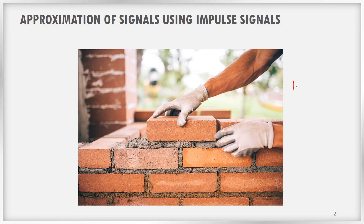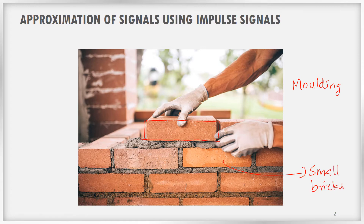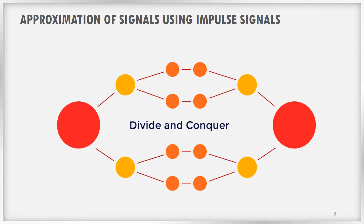Instead of molding our houses, we use small bricks to build them. Why? Because if we tried to mold or 3D print houses, we would not have that much flexibility. Since we use small bricks, we can make our houses in any form or shape — whatever curves or bends we want. Building the house is a large problem, and we approach it using small bricks. This is a divide-and-conquer approach: take a large problem and divide it into smaller problems so that analysis and study become very easy. We will adapt the same approach for signals and systems.